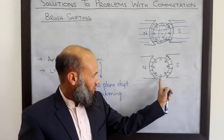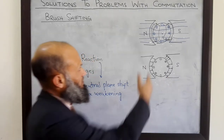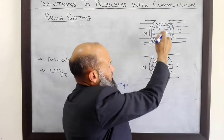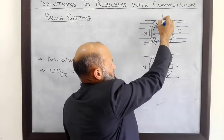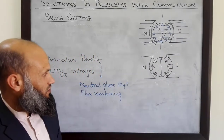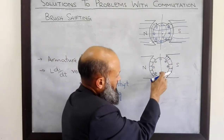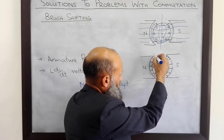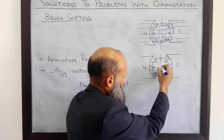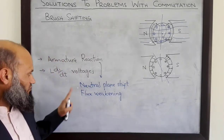This is called armature reaction. What are its consequences? In the case when there was no current in the coils, this was the neutral plane. Now, due to armature reaction, the neutral plane will be shifted to a new location. So one consequence of armature reaction is neutral plane shift.